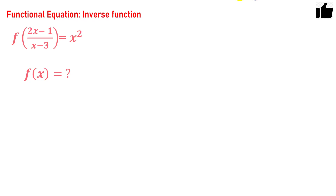Hello friends. In this problem you have to solve a functional equation and basically find the inverse function. The problem says you have been given f of (2x minus 1) divided by (x minus 3), which equals x squared, and you have to find the value of f(x).